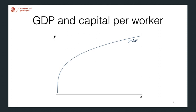Let's plot GDP and capital per worker. And as you can see here, as capital increases, output will increase and will continue to increase, but at a slower rate, because alpha is less than 1.